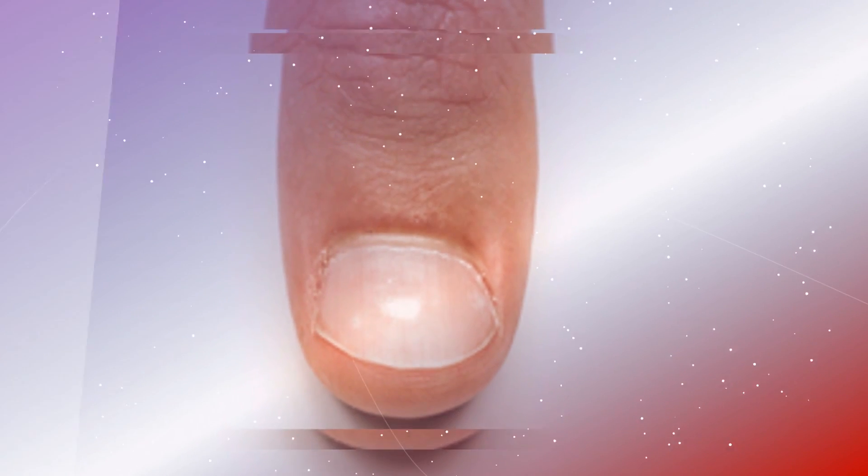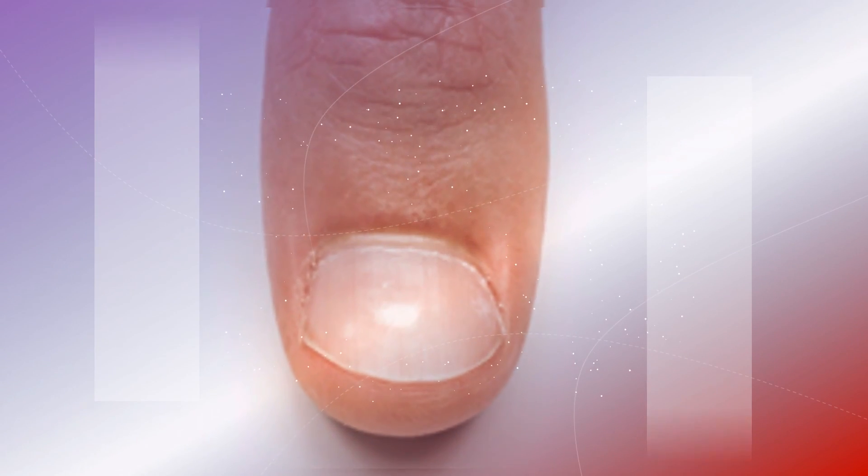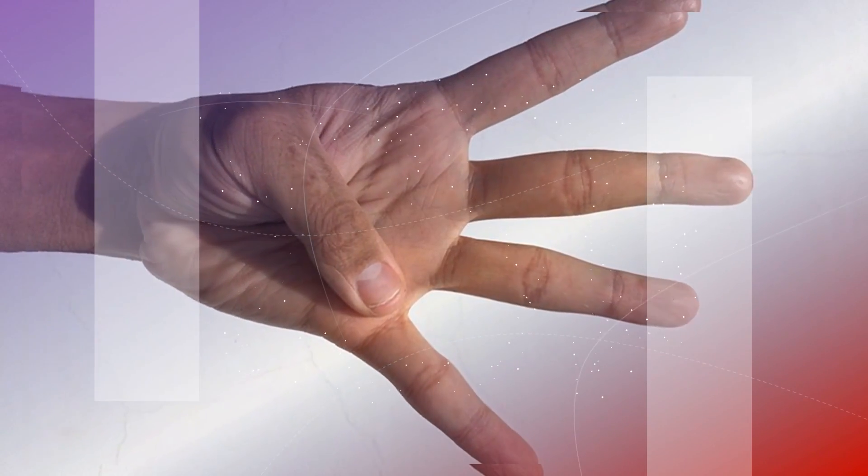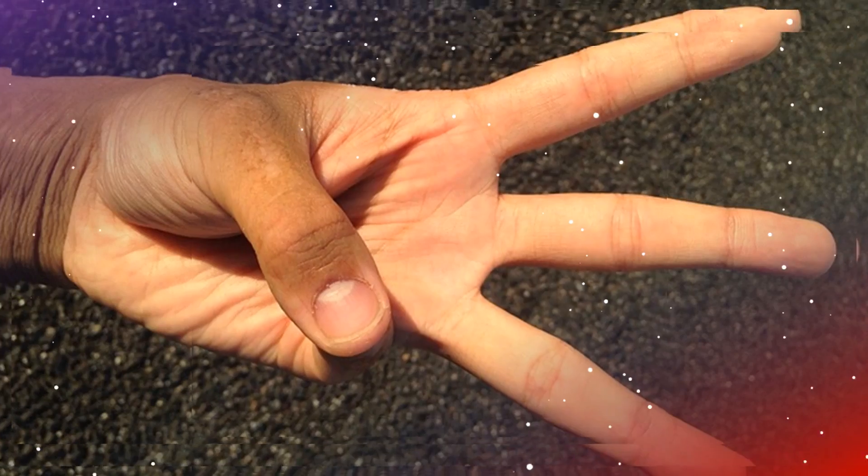As noted by the American Academy of Dermatology, nails often reflect our general state of health. Changes in the nail, such as discoloration or thickening, can signal health problems including liver and kidney diseases, heart and lung conditions, anemia, and diabetes.